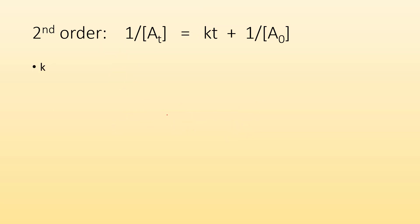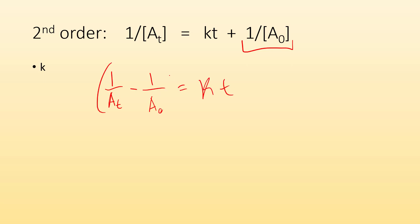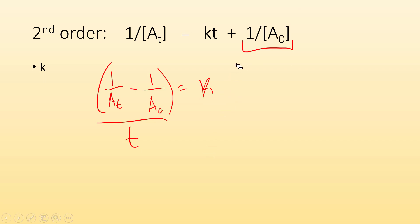If I want to solve for k, I need to get rid of the 1 over a zero term. So I get 1 over the amount at that time minus 1 over the starting amount equals kt. Now I divide each side by t, the t's cancel out, and now I've solved for k.